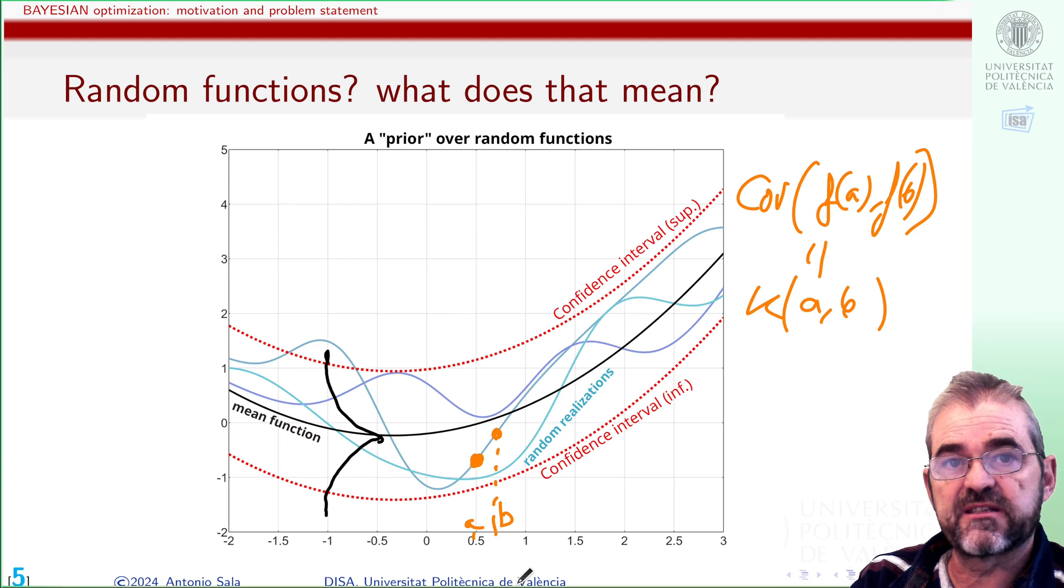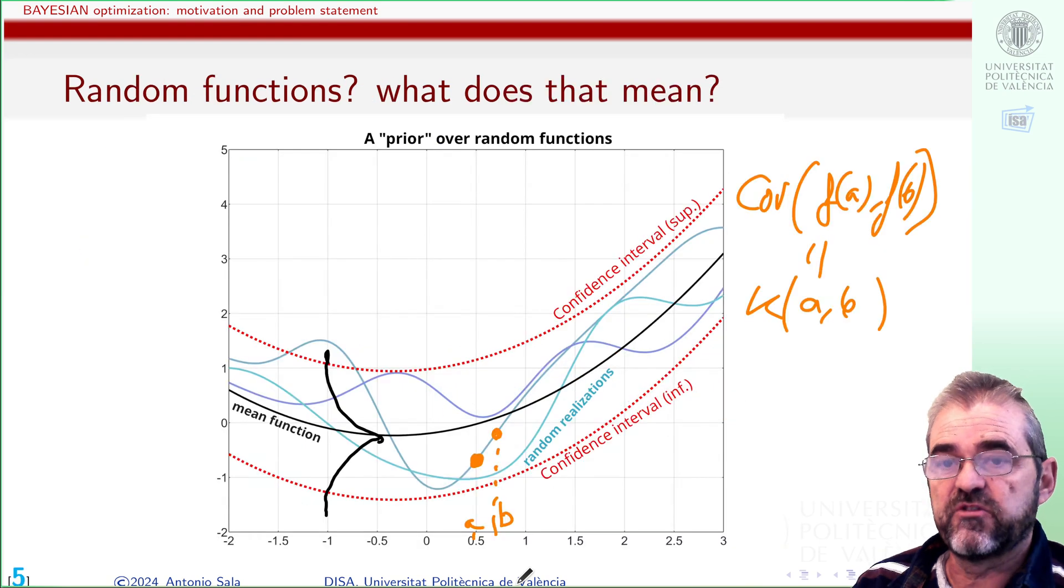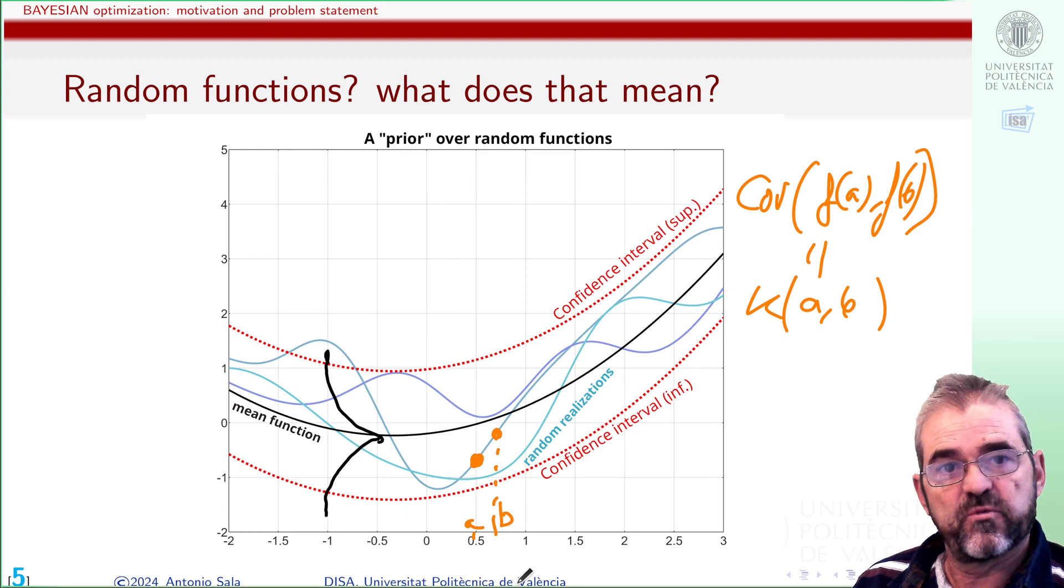So those covariance kernels are the missing bit in order to infuse apart from randomness issues with continuity, smoothness and whatever. Again this is material for a whole book on stochastic processes, we are just sketching the first glimpse on what those things mean.